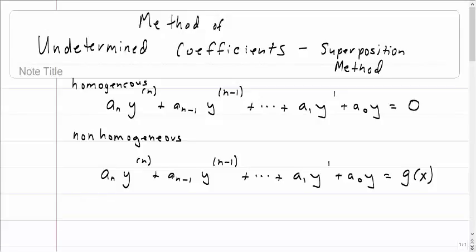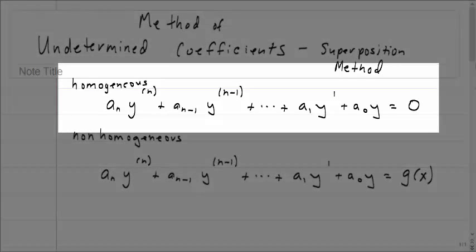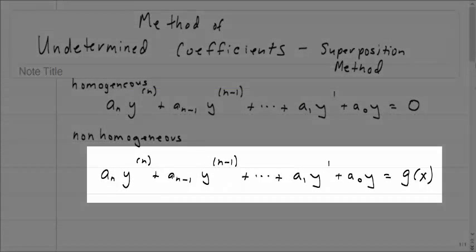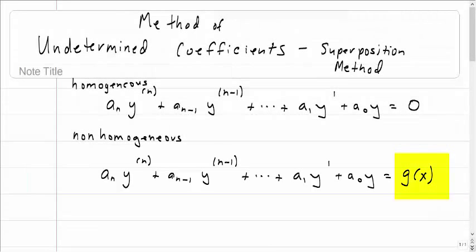This will be discussing the method of undetermined coefficients, specifically the superposition method. We've solved homogeneous differential equations of order higher than 1. However, sometimes we'll want to solve something in a non-homogeneous form — that is, what's on the right-hand side of the equal sign is a function of x. One of the methods to do this is the method of undetermined coefficients.